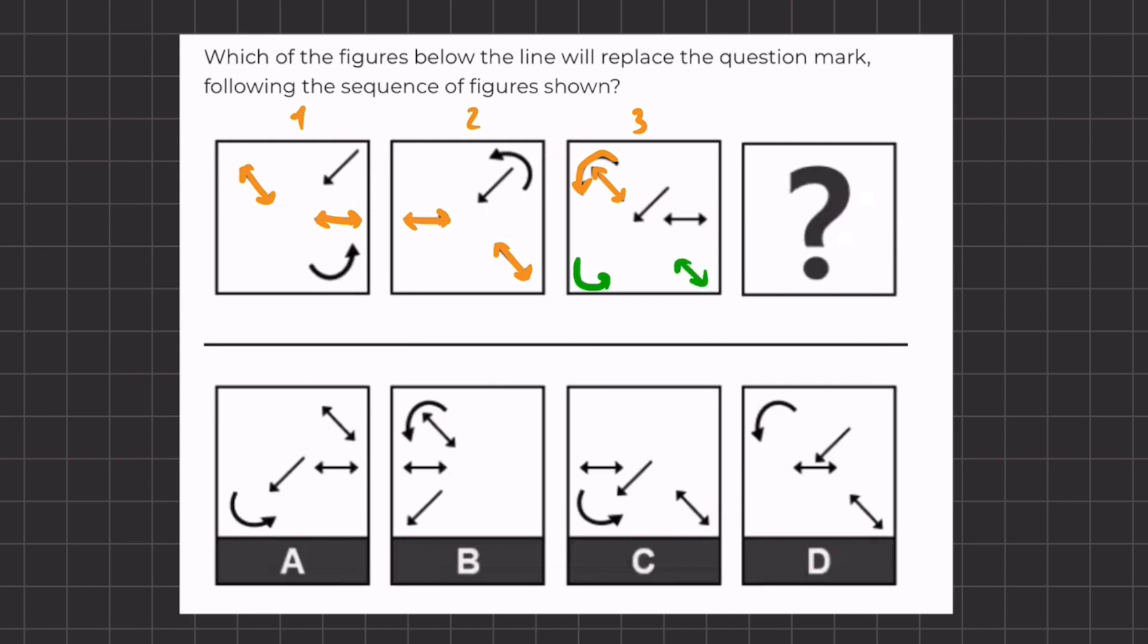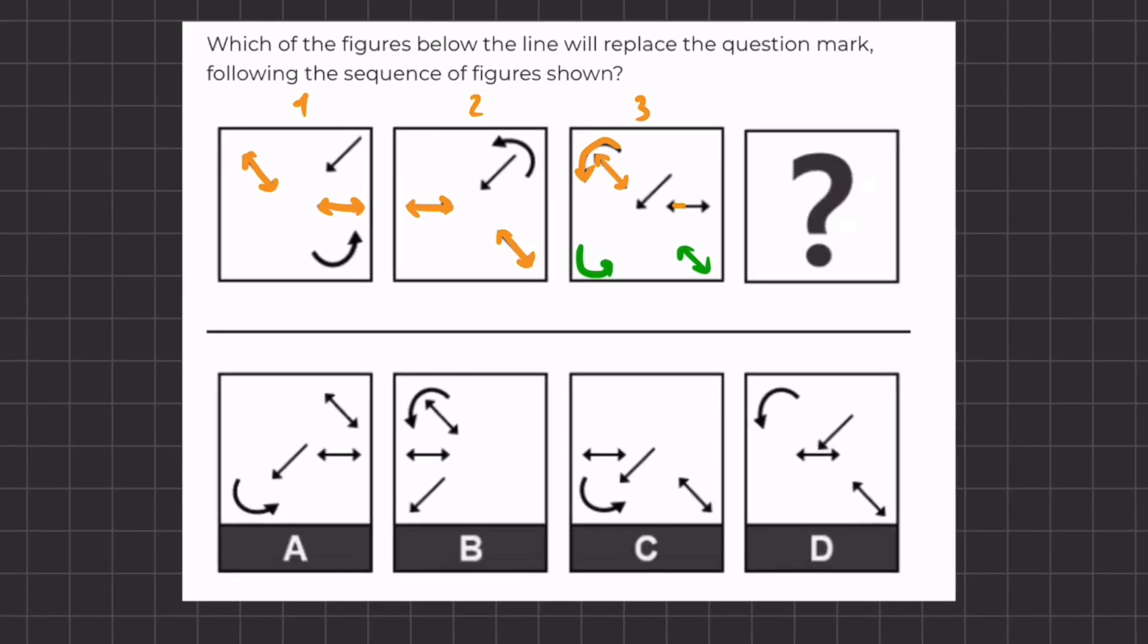And let's continue this pattern. We have this arrow here that is moving either to the left or to the right. And because it's already on the right-hand side, we're going to move it to the left-hand side. And we have our last arrow over here that is moving downward. So it should be somewhere over here.